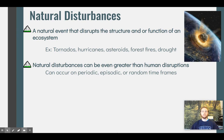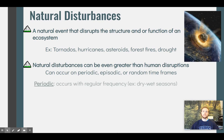Natural disturbances can appear on three different timescales: periodic, episodic, or random. A periodic event is one that occurs with some regular frequency — it's somewhat predictable. A great example is the wet and rainy seasons followed by dry seasons, such as in the savannah in Africa, where these happen pretty regularly.